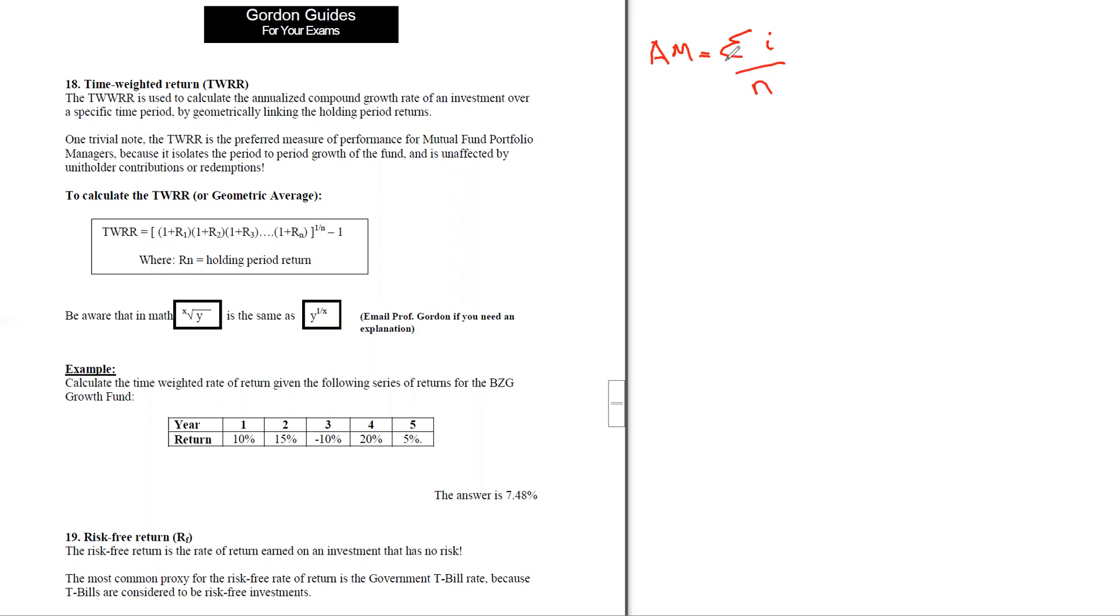This math formula looks kind of intimidating, but let's link it to our example. I've got an example down here where I've got some returns for this BZG growth fund over these five years. If I were to calculate the arithmetic average or arithmetic mean or the expected return, I would simply do 10% plus 15% minus 10% plus 20% plus 5% and divide all that by five because there's five data points.